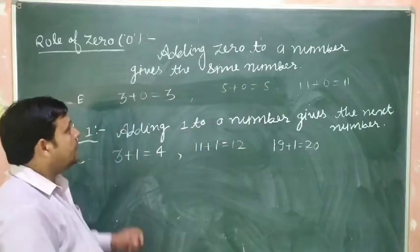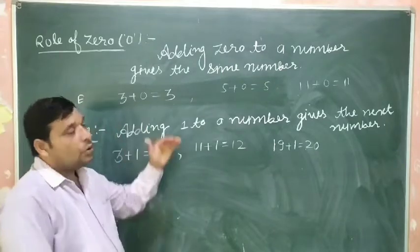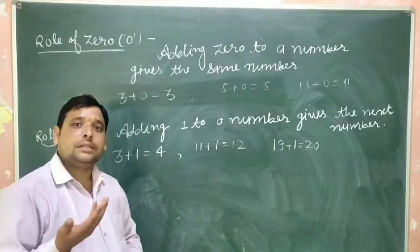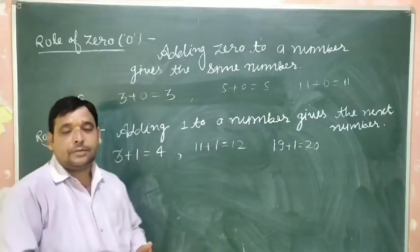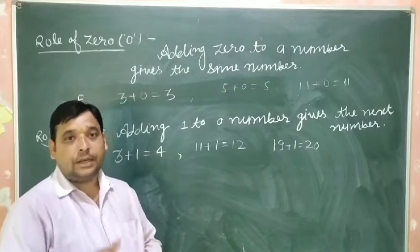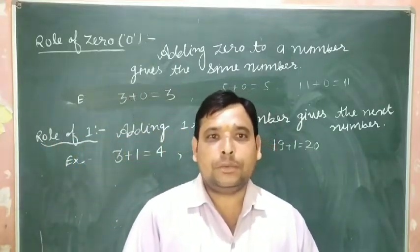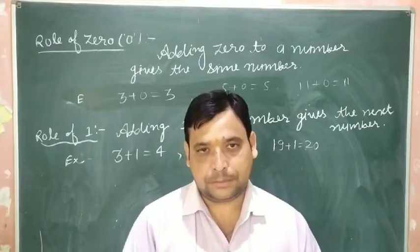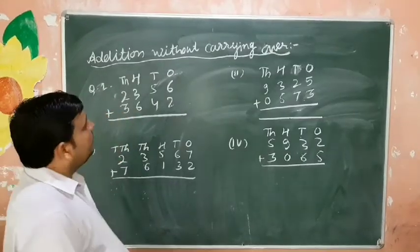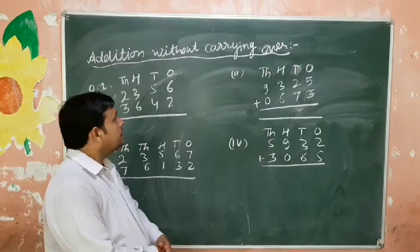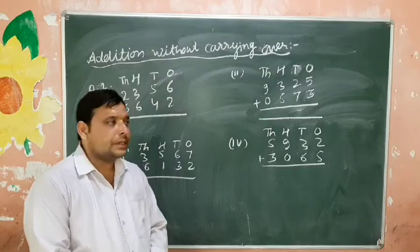Clear, students? To repeat: any number when we add zero, the answer is the same number. Any number when we add one, the answer is the next number. Addition has two types: addition without carry and addition with carry.